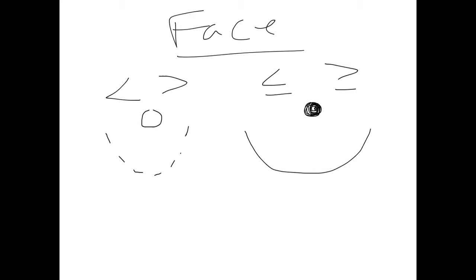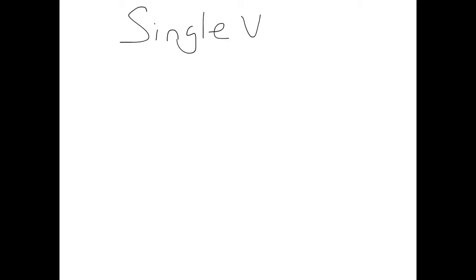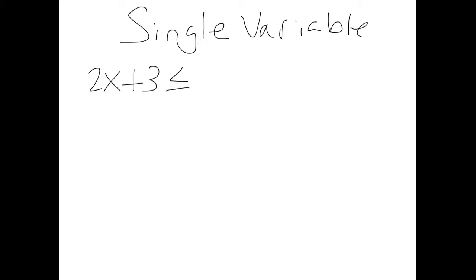A single variable inequality just means it has one letter in it. A single variable inequality would look something like this: 2x + 3 is less than or equal to 15. We solve for the only letter that's there, using the same steps we used when doing equations at the beginning of the year.